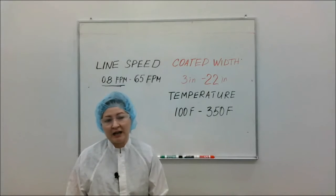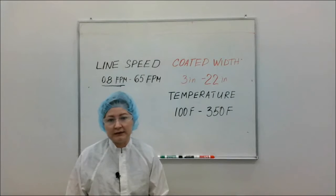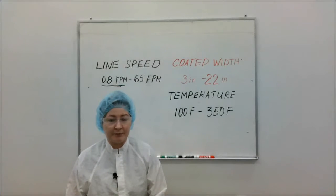And as for line speeds, we can set the equipment to run as low as 0.8 feet per minute and as fast as 65 feet per minute.